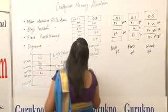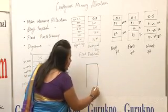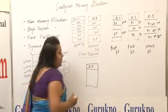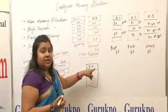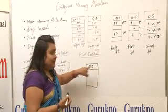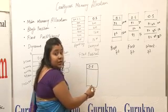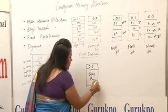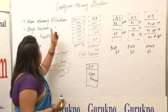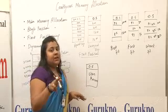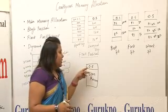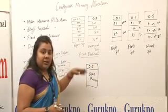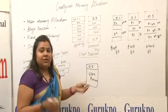Main memory is mainly categorized into two portions. The upper portion is kept busy in keeping the operating system inside it, and the lower portion of the memory contains user programs and user processes. This is main memory allocation, in which the memory is categorized into two halves — one for the operating system and the rest allocated to user processes.